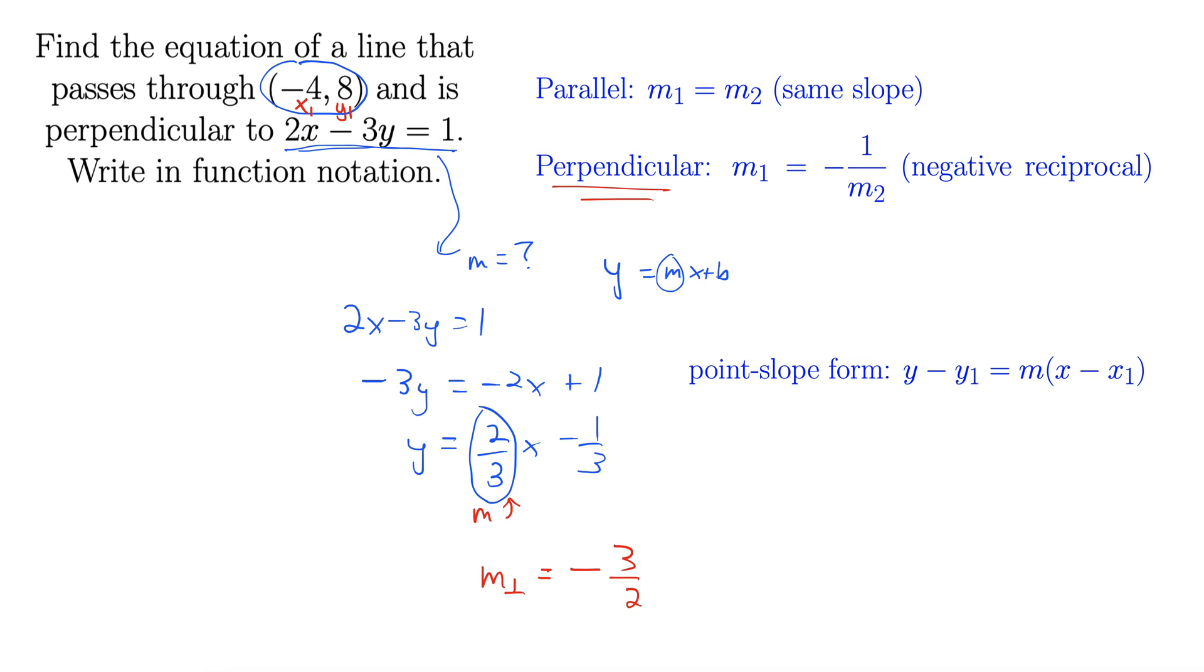y and x stay variables, y1 and x1 get replaced with a point. So we have y minus y1, which is 8, equals m, negative 3 halves, we got that from down here, times x minus a negative 4, x minus x1.